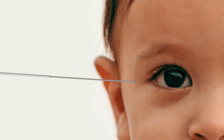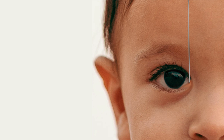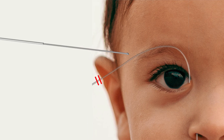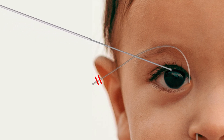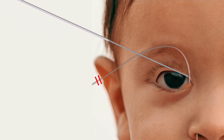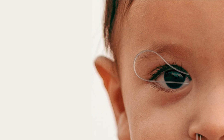A Crawford stent is then placed by first threading one probe through the tear duct, which is then passed through the nasolacrimal duct and out the nose. The other Crawford probe is passed through the other tear duct in a similar manner. The stent connected to both Crawford probes is then cinched down close to the tear ducts.